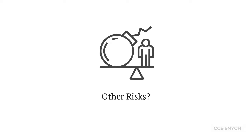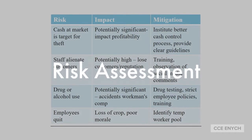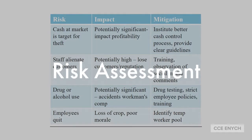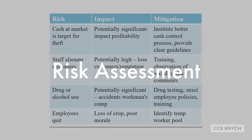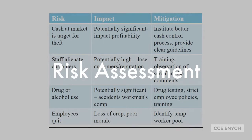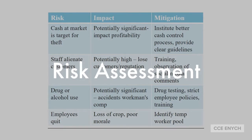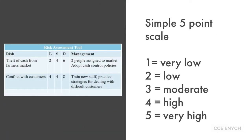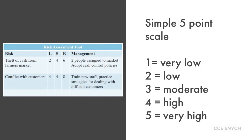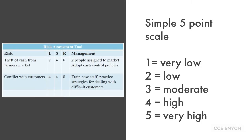What other risks can you think of? Theft, alcohol or drug use, issues with customers, conflict and harassment at work, absenteeism — these can all wreak havoc with a farm business. A risk assessment can help to identify and develop mitigation strategies. Because the number of possible problems can be overwhelming, a simple five-point scale can be used to help prioritize mitigation efforts. For each risk you identify, assign a score to the likelihood that it will happen and the severity to your business if it does. The sum of these scores is your risk index.